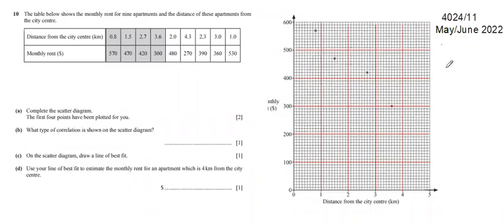Question number 10, May/June 2022. The table shows the monthly rent for nine apartments and the distance of these apartments from the city center. Our table is here with the distance and the monthly rent for this apartment.